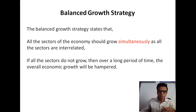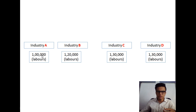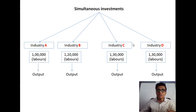Suppose there are four industries — industry A, industry B, industry C and industry D — and all of them employ a certain number of laborers. These figures are hypothetical. Industry A employs 1 lakh laborers, industry B 1 lakh 20,000, industry C and D 1 lakh 30,000 each, and all of them must be producing some output: A units, B units, C units and D units respectively. Now the government invests 500 crore rupees in each of these industries simultaneously.